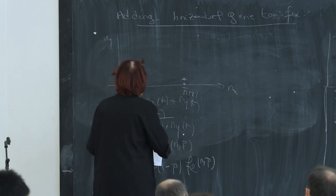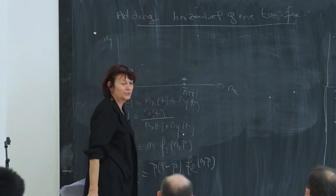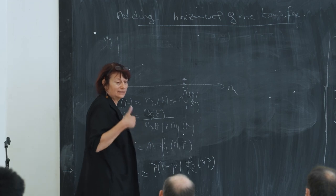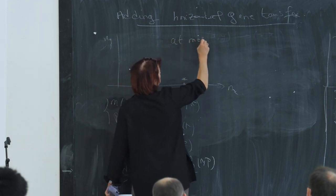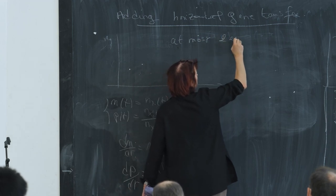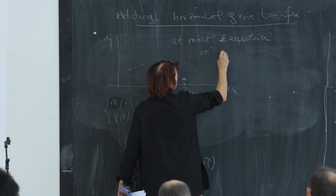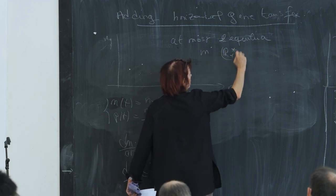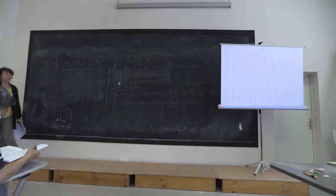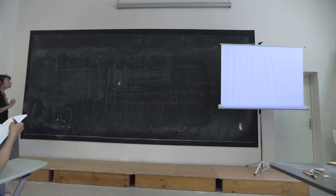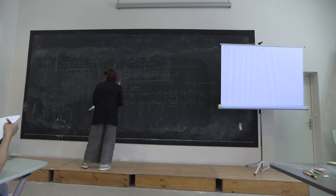If you are looking for equilibria inside the domain, you make both equations equal to zero, replace N by the function of p, and you prove that the resulting function of p is a polynomial of degree two. So you have at most two equilibria inside the positive quadrant — compared to the Lotka-Volterra system which has only one.